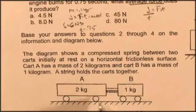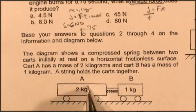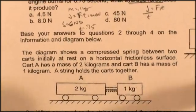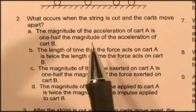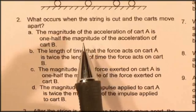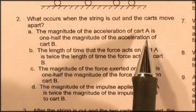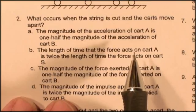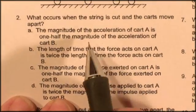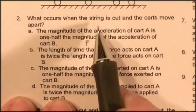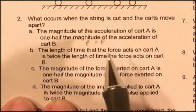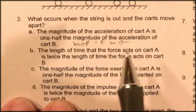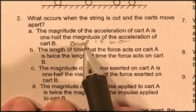So in this situation, we have two dynamic carts. This one's two kilograms, this is one kilogram. The string holds the carts together. So the question is, what occurs when the string is cut and the carts move apart? The magnitude of the acceleration of cart A is one half the magnitude of the acceleration of cart B. Well, that's going to be true. Force on both sides is going to be the same. Mass times acceleration on both sides is going to be the same. Two times the mass, one half the acceleration.